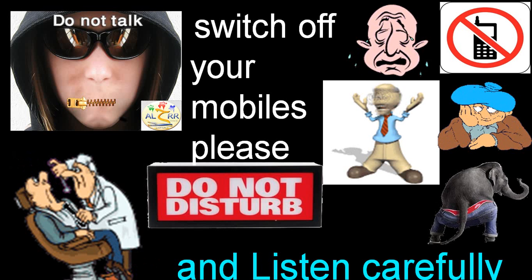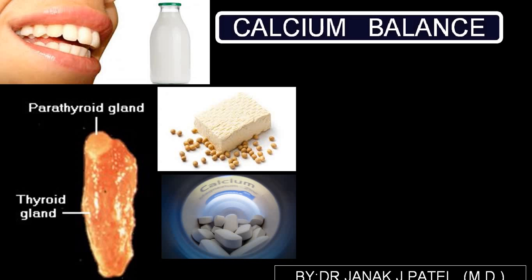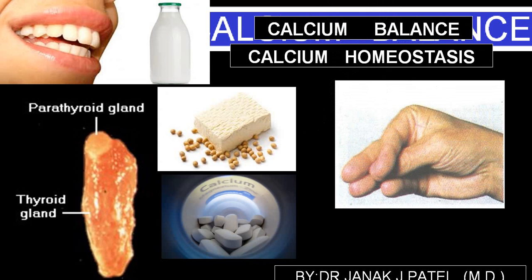That is calcium homeostasis, or we call calcium balance, because you can have two disorders. One is lack of calcium — hypocalcemia — and the opposite, hypercalcemia. Both are dangerous. You should be able to identify those conditions and treat them. Today we'll be talking only on calcium balance — how the calcium balance takes place, which we call homeostasis.